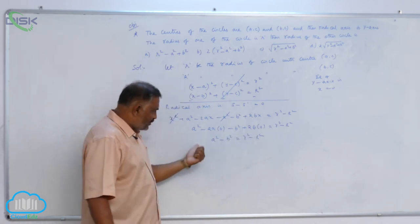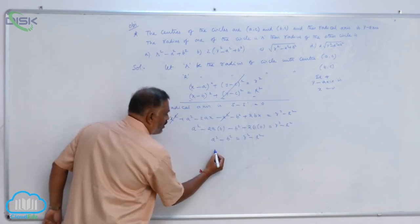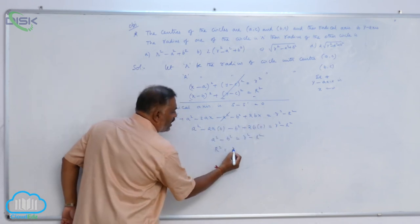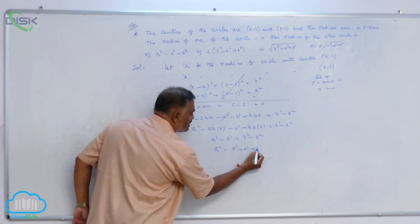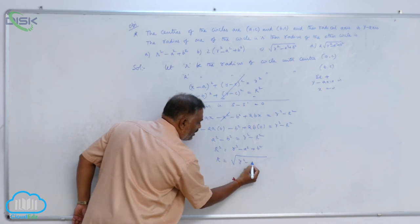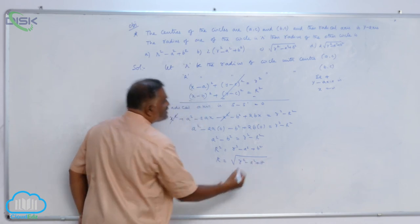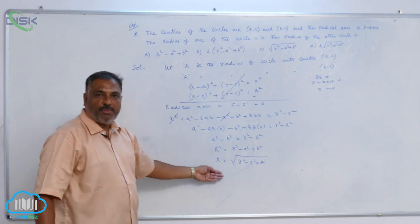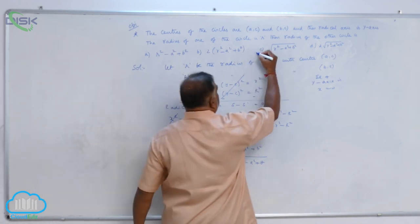Bring r² to this side, these two terms to that side. So, R² = r² - a² + b². Capital R = √(r² - a² + b²). So from options, option C is correct.